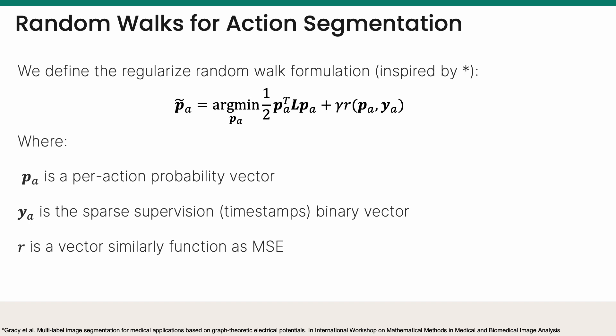The Laplacian controls the label's propagations in the graph. The second term enforces similarity in the timestamps and regulates the propagation process.